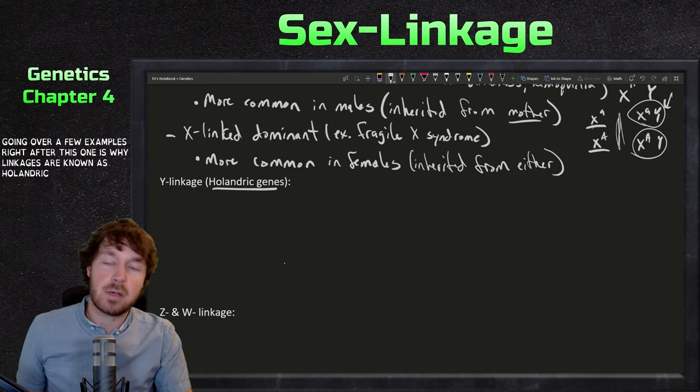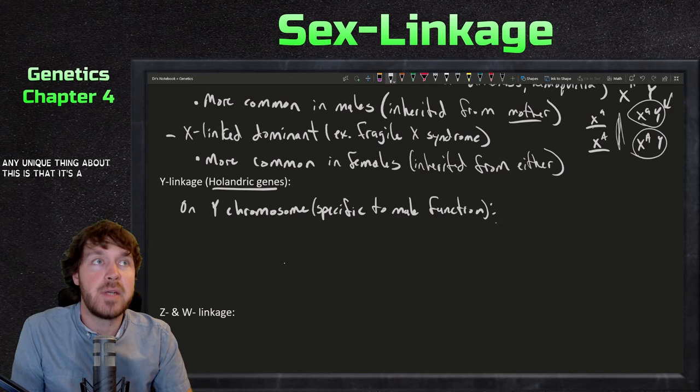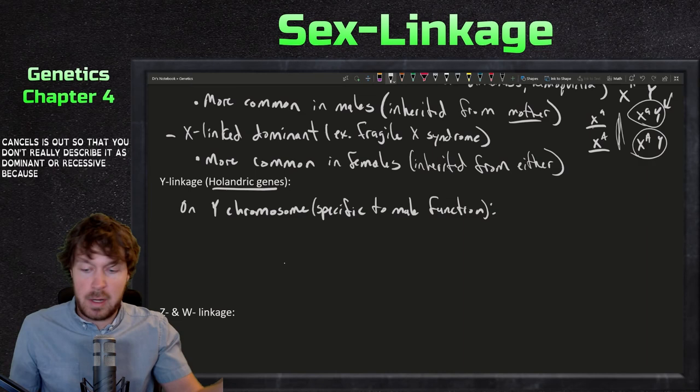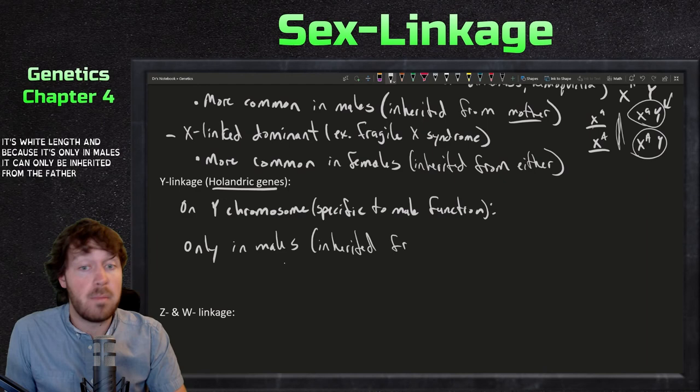Next up is Y linkage. These are known as holandric genes — if you ever hear that something is a holandric gene, it's only found on the Y chromosome and is specific to male function. Uniquely, holandric genes are not described as dominant or recessive because you either have it or you don't — there's only one copy and nothing can cancel it out.